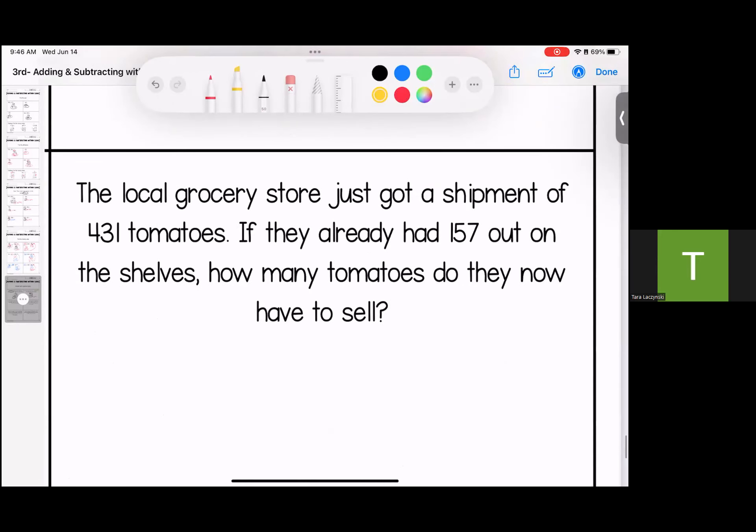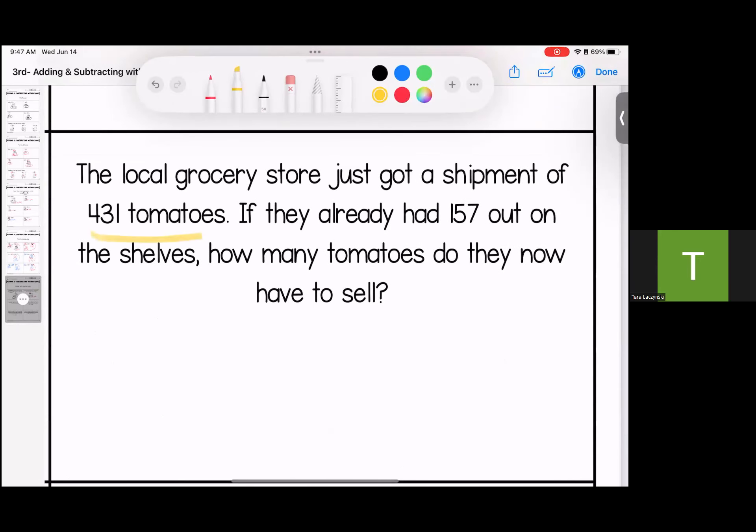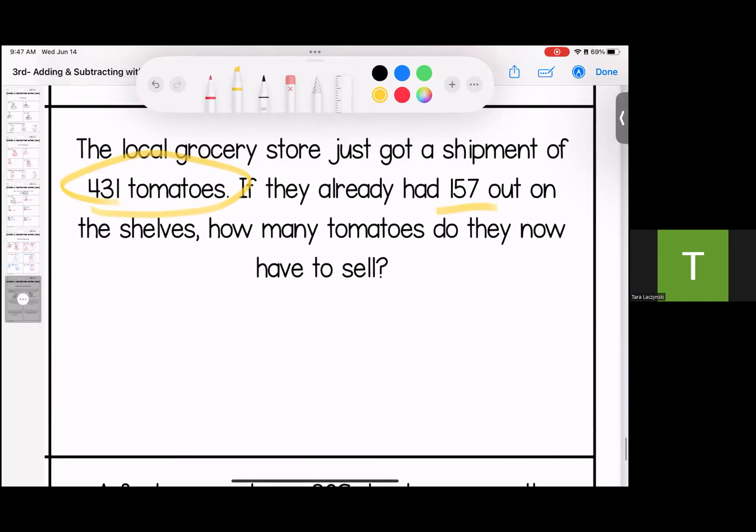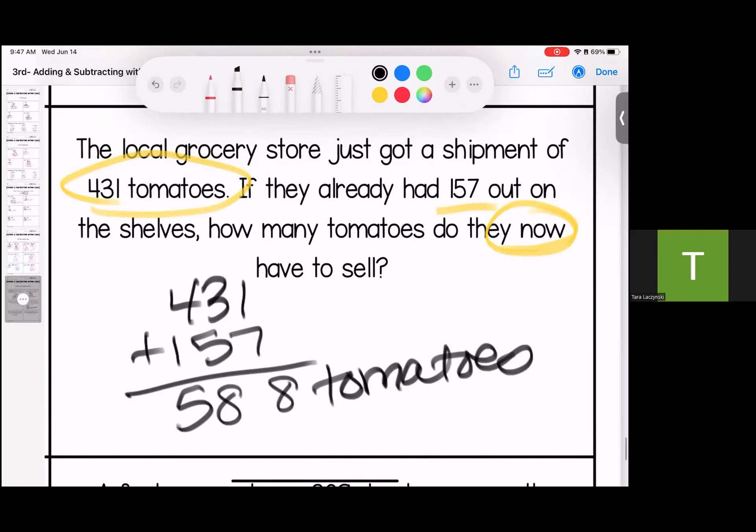Coming down here. A local grocery store just got a shipment of 431 tomatoes. If they already had 157 out on the shelves, how many tomatoes do they have now? Now, that's an adding problem. 431 plus 157. They now have 588 tomatoes.